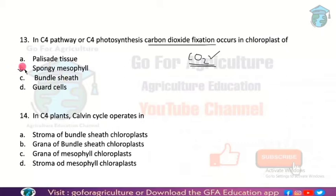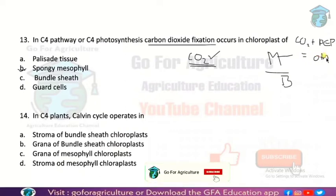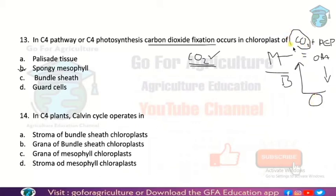So if you guessed mesophyll cells — that's a very right answer. C4 basically has two parts: one is mesophyll cells and the other is bundle sheath cells. CO2 reaction starts from mesophyll cells because CO2 is accepted by PEP (phosphoenolpyruvate) and forms oxaloacetic acid. That's why CO2 fixation starts from mesophyll cells.